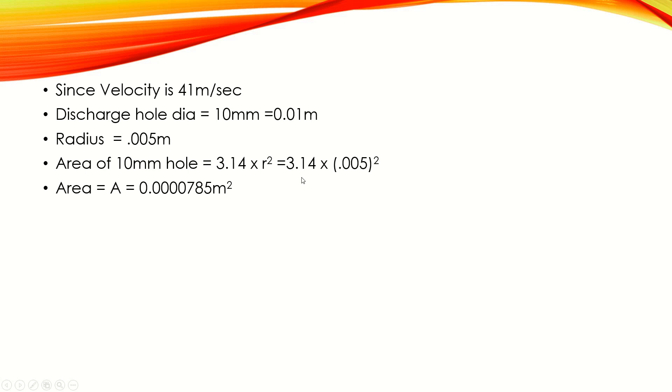Now the question was, what will be the flow rate in one hour? We have the velocity and we have the discharge hole diameter. Converting into radius, half of diameter, we will find area of the 10mm hole: 3.14 multiplied by radius squared, so we get the area 0.000785 m². Flow rate equals velocity times area. Putting the values, we get 0.00321 m³/s. Converting into hours, multiplied by 60, we get 0.1931 m³ per hour.